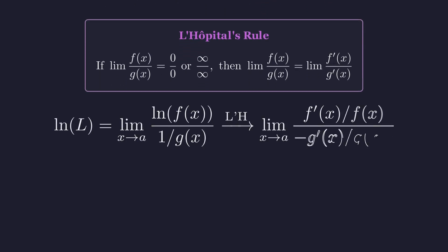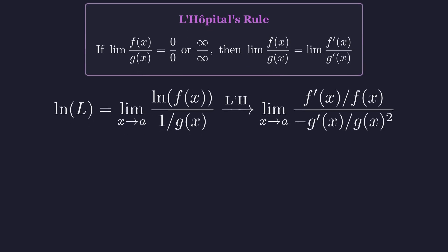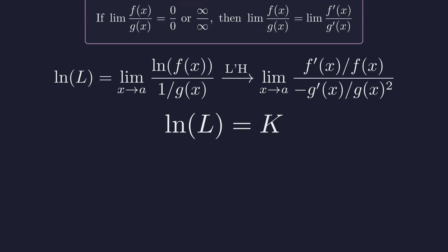When we apply L'Hopital's rule, we differentiate the numerator and denominator. The exact form depends on our specific functions, f and g. After working through the derivatives and simplifying, we get some value. Let's call this resulting limit k. This is the value that the natural log of L equals. But remember, our goal was to find L, not the natural log of L. To isolate L, we exponentiate both sides, giving our final answer, e to the power of k, provided k is finite.